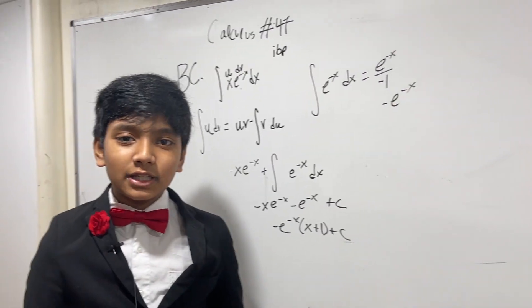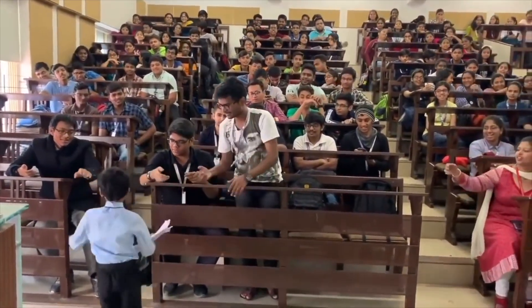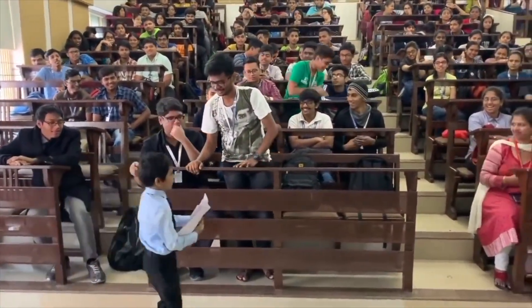Thank you everybody for watching. We'll see you in the next one. Suborno Isaac Bari, who is known as the god of mathematics, became the youngest professor in the history of mankind.